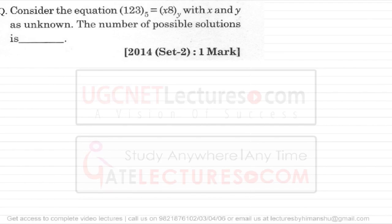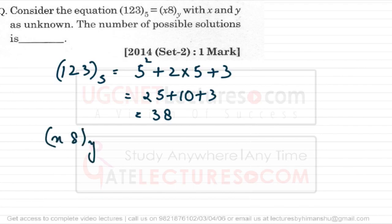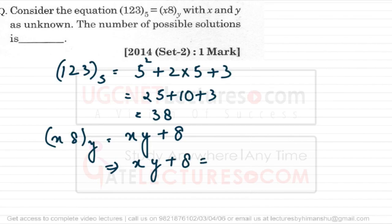Look at the next question, also asked in GATE 2014 in a different set. It says that 123 in base 5 equals x8 in base y, where x and y are unknown, and asks for the number of possible solutions. Convert both sides to decimal: 123 in base 5 is 5² + 2×5 + 3 = 38. The RHS x8 in base y converts to xy + 8. Setting xy + 8 = 38 gives xy = 30.